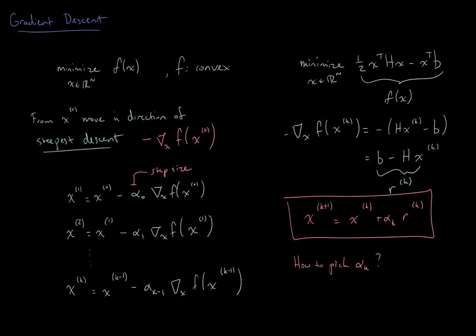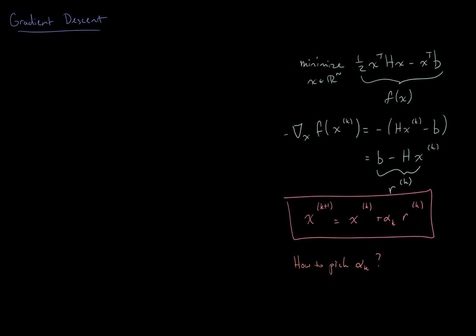We're fortunate in the least squares case in that we can actually do something very intelligent to pick alpha k. Going back to our objective function, we have f of xk plus one, where xk plus one is xk plus alpha times rk. We'd like to choose alpha to get the most bang for our buck — to ensure f of xk plus one is as small as it could possibly be. Because f is a quadratic function, f of xk plus alpha times rk is a quadratic function of alpha, which is just a single scalar. So we can find the choice of alpha that gives us the minimum value by taking the derivative with respect to alpha and setting it equal to zero.